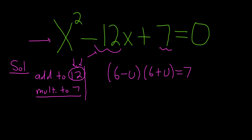Now we can use the difference of squares formula. So it's a minus b, a plus b. So if you know the difference of squares formula, I'll write it just in case. It's a squared minus b squared. So here it'll be 36 minus u squared, and that's equal to 7.